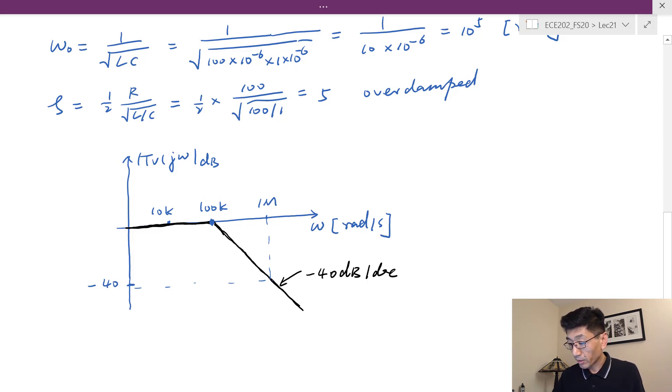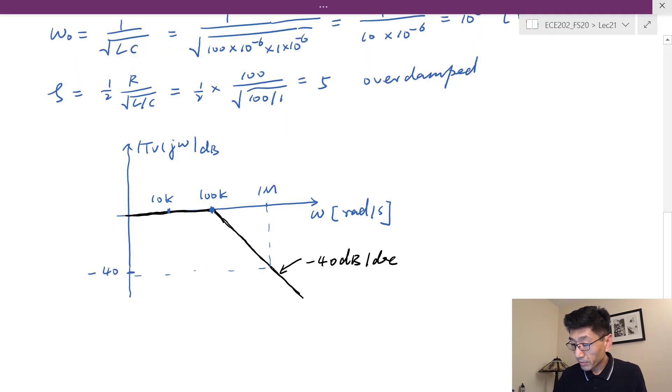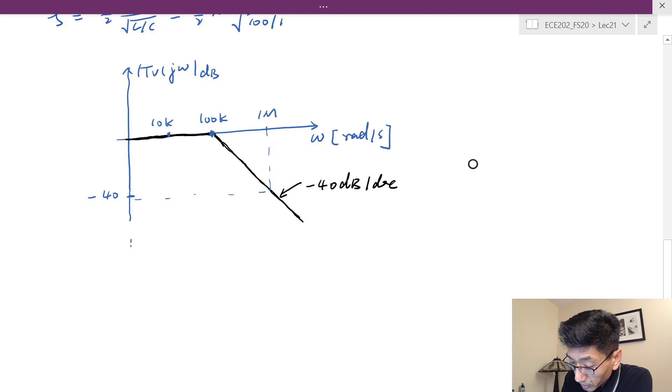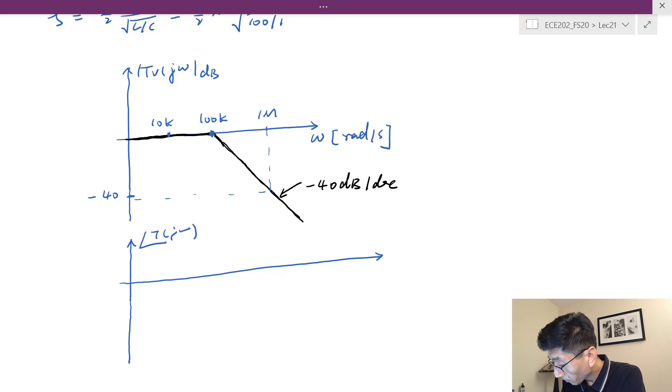That's for the gain plot. Let's look at the phase plot. At low frequency we have zero, right? And high frequency this is going to drop to -180°. So in this plot here we are plotting T(jω), the phase angle. We align this as 10k, 100k, and 1 meg. We have 10k for the frequency. We need two decades for the transition.